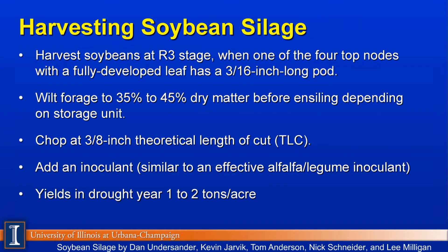A quick word about harvesting soybeans for silage as a forage. The R3 stage is perhaps the optimal place where you're going to find one of the four top nodes with fully developed leaf structure and a pod about 3/16 inch long. We would like to wilt this feed down to 35 to 45% dry matter before ensiling, and that level will depend on your storage unit. Upright silos need to be drier; bags, bunkers, and piles can be on the wetter end of this range. We would like to chop at a 3/8 inch theoretical length of chop, which should give you about 40% on the top of the Penn State box, about 40% in the middle, and around 20% in the bottom box or boxes. We recommend using an inoculant to stimulate and control the fermentation process on drought-stressed forages, similar to what you would use on a legume or alfalfa type product on your farm.